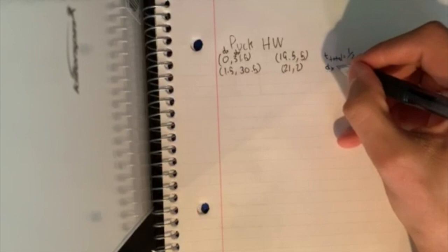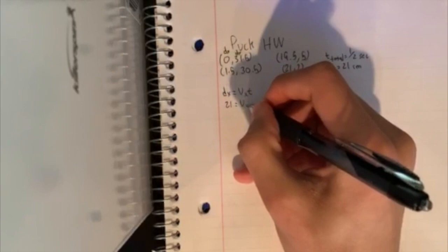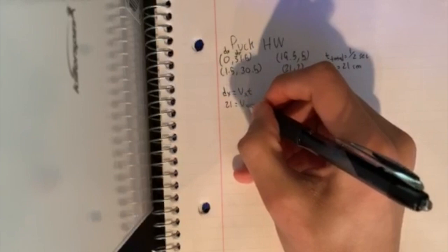We know we have the t-total, so now we can solve for v of x using the equation d of x equals v of x times time. So 21 equals vx times 1/2. If we multiply by two on each side, we get that v of x equals 42 centimeters per second.